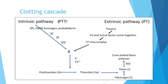The intrinsic pathway is measured by the PTT (partial thromboplastin time). It starts with factor 12, along with high molecular weight kininogen, prekallikrein, factor 11, factor 9, and factor 8 — all resulting in activation of factor 10. Active factor 10 then acts on prothrombin, converting it to thrombin (active factor 2), which acts on fibrinogen to convert it into fibrin (active factor 1). With the help of factor 13, this forms the blood clot or the cross-linked fibrin polymer.